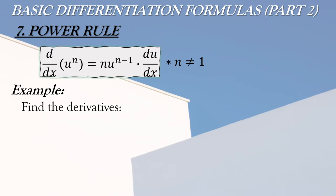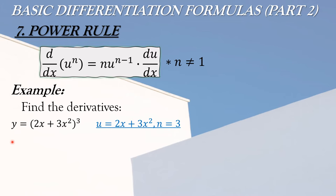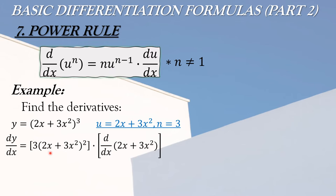Another example for the power rule: y equals (2x + 3x squared) cubed. Kung mapapansin nyo ang nasa loob ng parenthesis natin ay binomial, so ang binomial na yan yung ating u, at ang n naman natin ay yung exponent na nasa labas which is 3. Apply the formula: n muna, then imumultiply natin yun sa u, so magiging 3 times (2x + 3x squared) quantity squared. Gumamit tayo ng bracket para maigrupo natin at hindi maisama yung unang ito sa paghahanap ng derivative ng u.